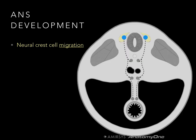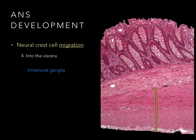The last neural crest cell migration deals with parasympathetics — these cells migrate into the viscera themselves, as shown by the blue arrows, ending up in the wall of the organ itself as intramural ganglia. An example is seen in this cross-section through part of the small intestine: what you knew in histology as Auerbach's plexus — that is an intramural ganglia.